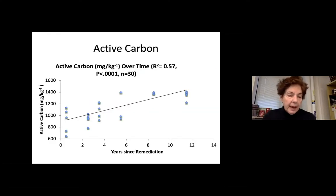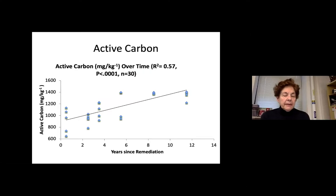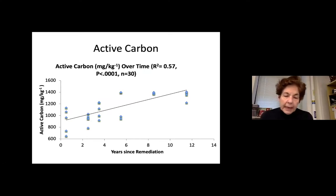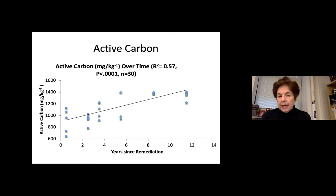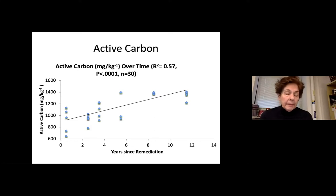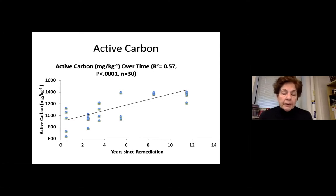We are also increasing active carbon over time. Active carbon is the portion of organic matter that serves as food for microorganisms. By creating structure and having microorganisms break down coarser organic matter, we get greater active carbon, which increases the population of microorganisms doing the heavy lifting of creating structure and releasing nutrients. We are feeding the microorganisms and creating more active carbon, which increases their activity.